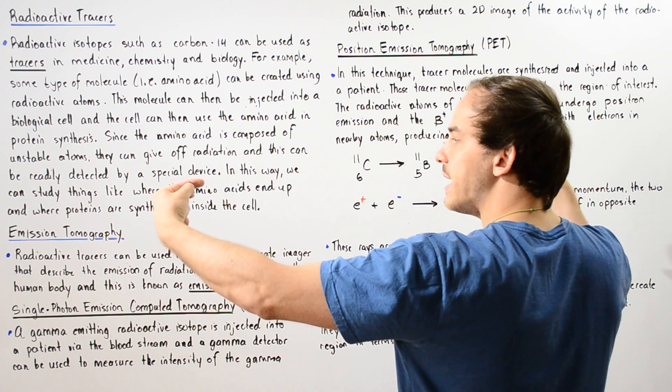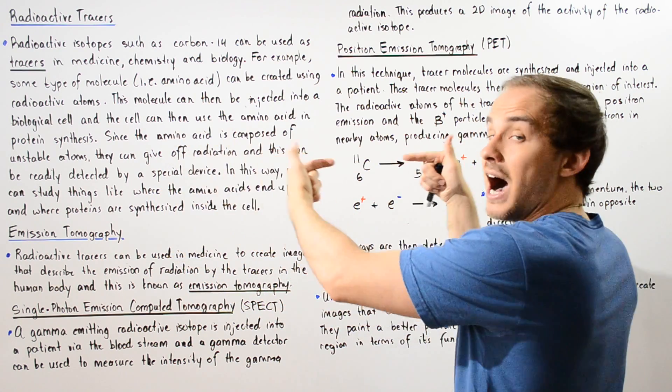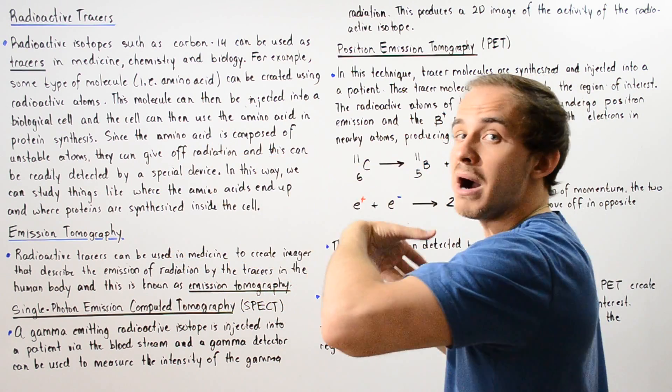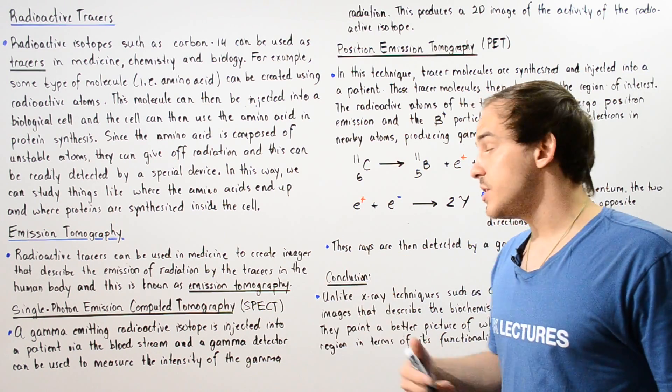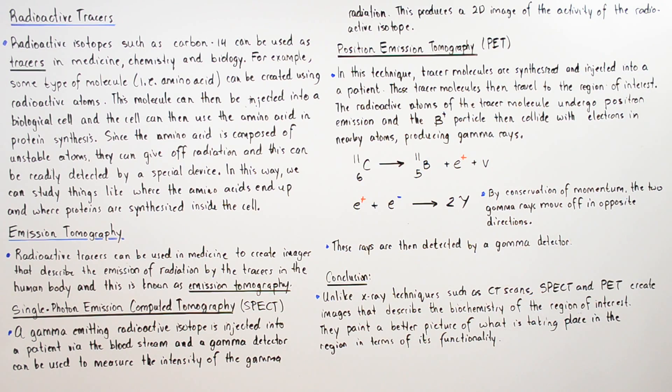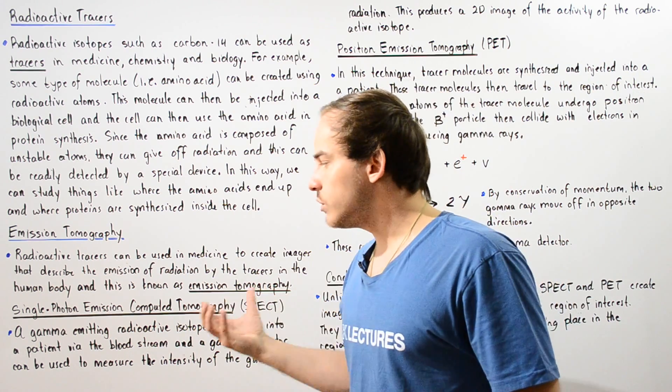Because these electrons basically collide head-on, by the conservation of momentum, the two gamma rays that are produced must move off in opposite directions. These rays can then be picked up using a gamma radiation detector.